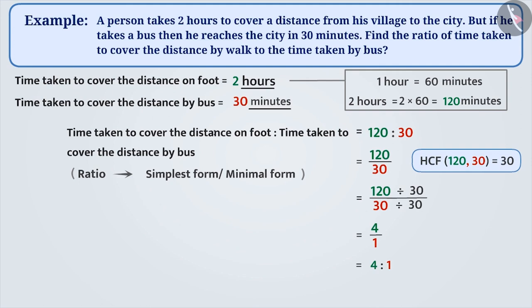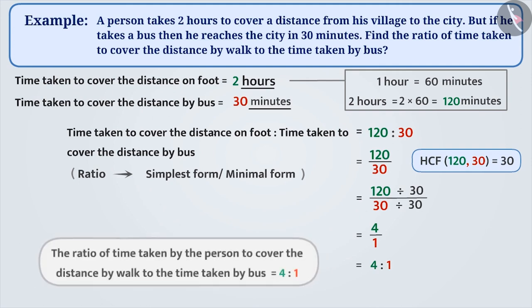This can be expressed as 4 is to 1. Therefore, the ratio of time taken by the person to cover the distance by walk to the time taken by bus is 4 is to 1.